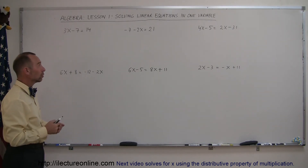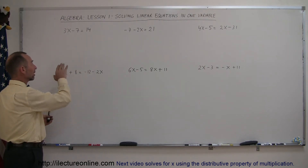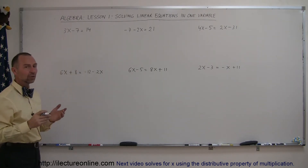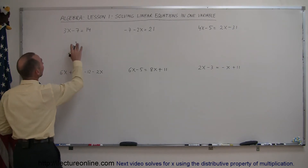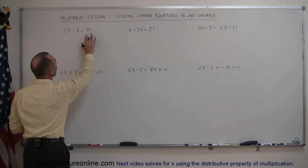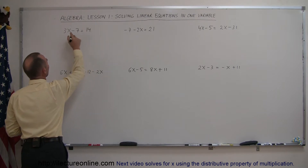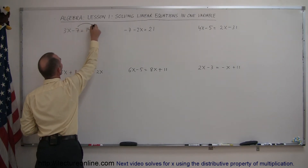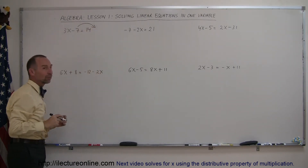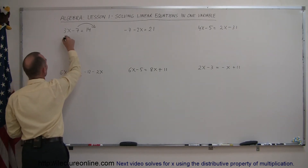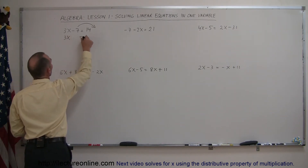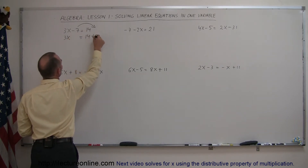There's a special technique we use: we isolate the X on the left side and move everything else to the right side. We look for all the terms that do not have an X and move those to the right; all terms that have an X move to the left. When we move things across the equal sign, the sign changes. So this becomes 3X equals 14, and the negative 7 on the left becomes plus 7 on the right.